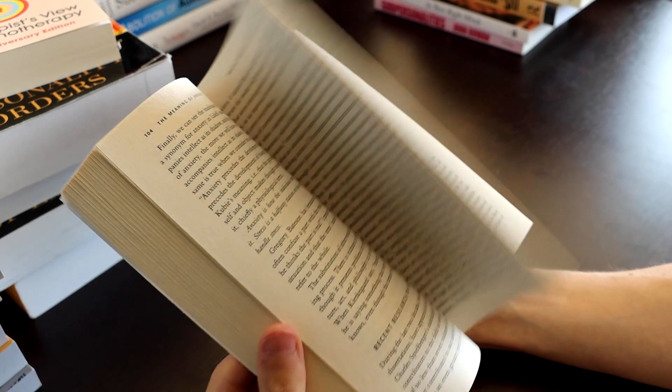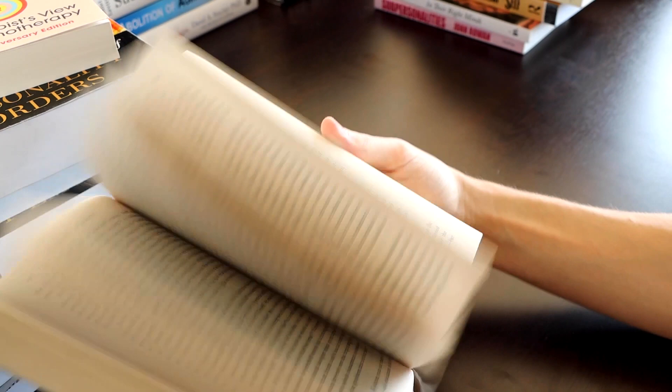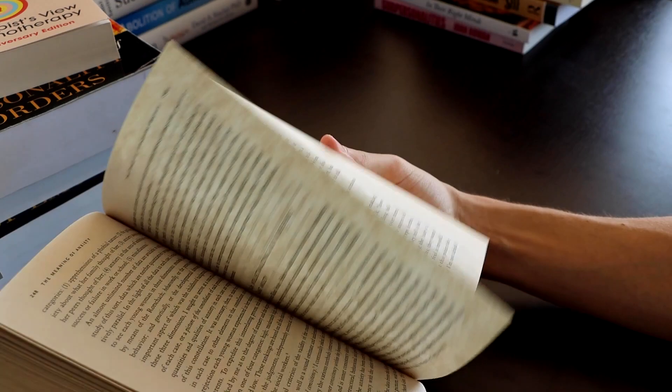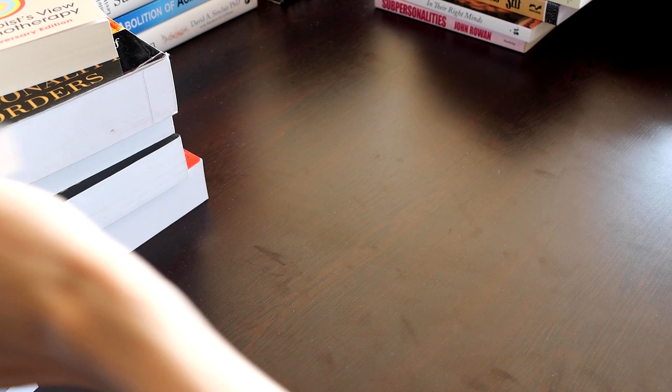Rollo May, The Meaning of Anxiety. This is actually a book I picked up thinking it was going to be more existential, kind of like philosophy. And it's actually a very rigorous analysis of anxiety. It's a very empiricism heavy book. I haven't read it yet, but I'm looking forward to reading it. He's a famous writer as well.